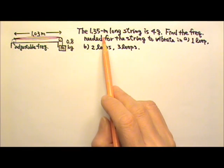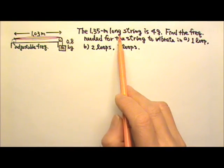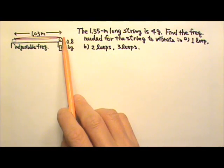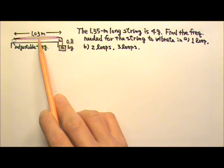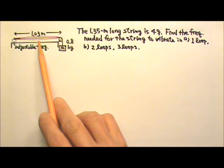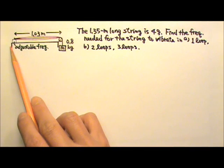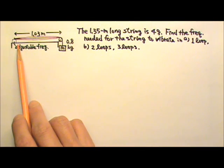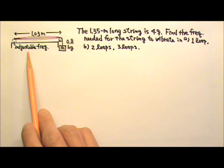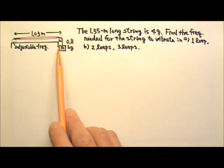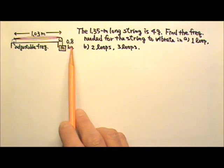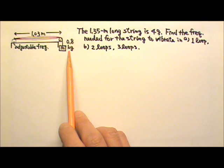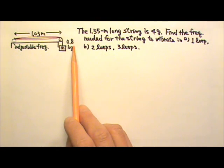The 1.35 meter long string has a mass of 4 grams. The vibrating part of the string is 1.03 meters long. The left end of the string is attached to a vibrating motor with adjustable frequency. The right end of the string is attached to a hanging weight of 800 grams, or 0.8 kilograms.